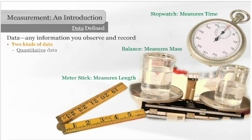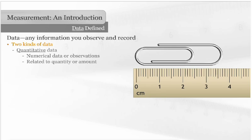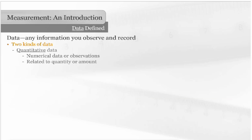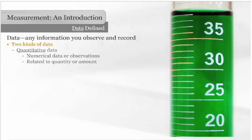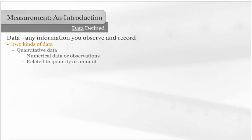The first is quantitative data, which are numerical data or observations that relate to quantity or amount. Instruments that collect quantitative data have graduations, which are small lines or divisions that represent units. For example, the graduations on this ruler represent millimeters and centimeters, and the graduations on this graduated cylinder represent milliliters.